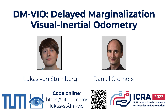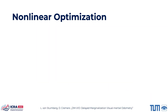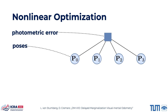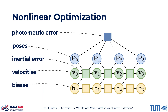We present MVIO, an open source visual inertial odometry method which outperforms the state of the art. We optimize a non-linear energy function consisting of a photometric error term for visual residuals and an inertial error term based on IMU pre-integration.